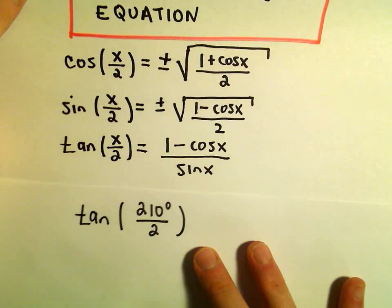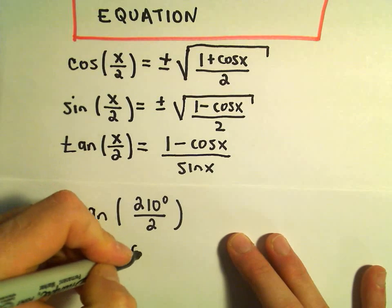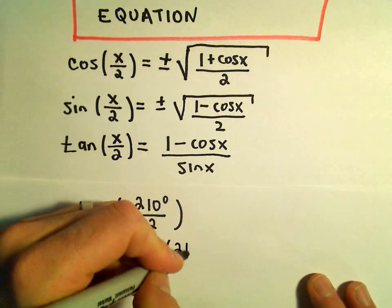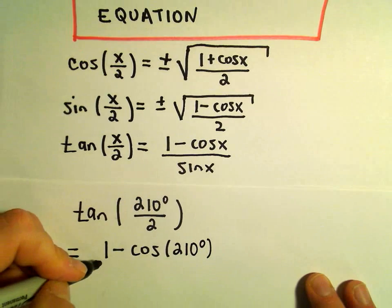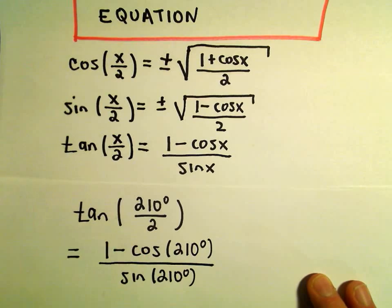So we'll use the bottom identity. And it says we simply get 1 minus cosine of whatever value's hanging out on top, which is going to be 210 degrees, all over sine of 210 degrees.